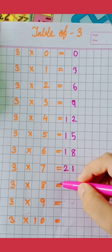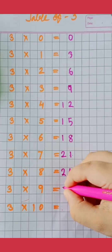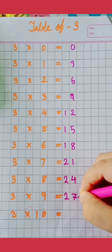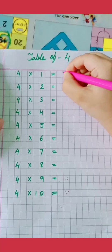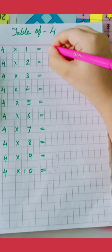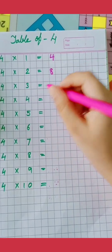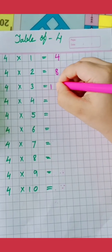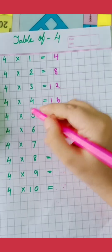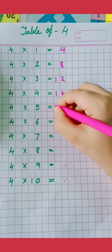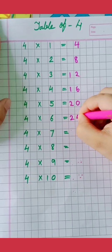3 8's are 24, 3 9's are 27, 3 10's are 30. Table of 4. 4 1's are 4, 4 2's are 8, 4 3's are 12, 4 4's are 16, 4 5's are 20, 4 6's are 24.